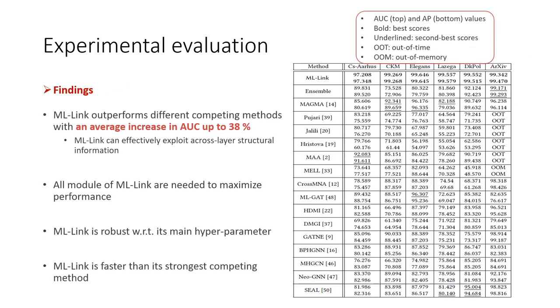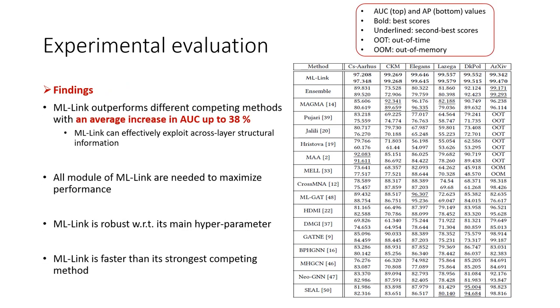Among the major findings, ML Link outperforms different competing methods in terms of both AUC and average precision scores, and it is faster than the strongest competing method.